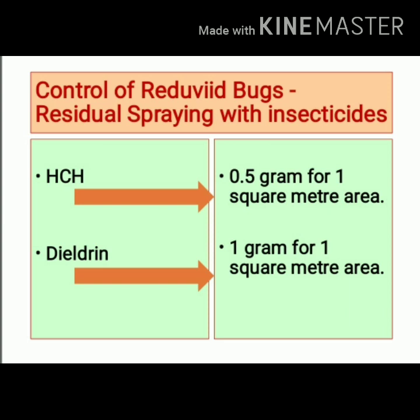Reduviid bugs can be controlled by residual spraying with insecticides. For 1 square meter area, we can use 0.5 gram of HCH (hexachlorocyclohexane), or for the same area we can use 1 gram of Dieldrin.